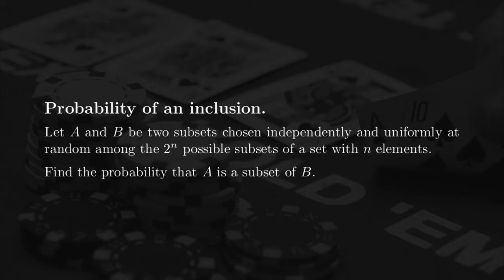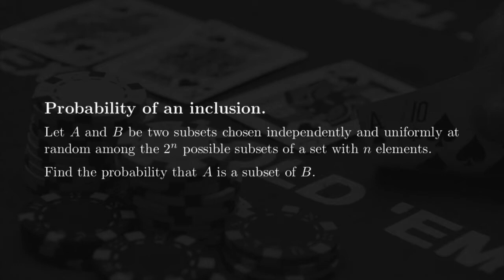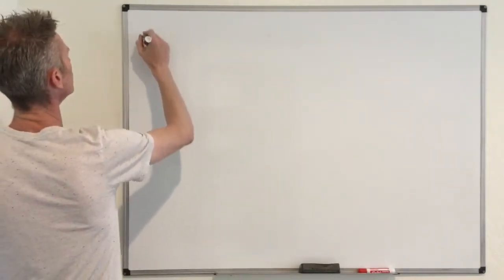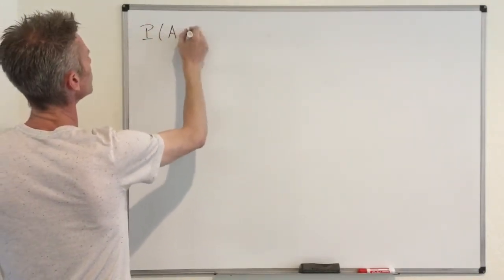We start with a set of n elements, which means that this set has 2^n possible subsets, and we are going to choose uniformly at random two of those subsets — with repetition, meaning that if we call those two subsets A and B, then A can be equal to B. The goal is to find the probability that A is a subset of B.